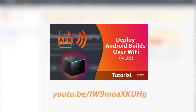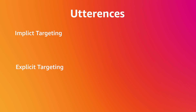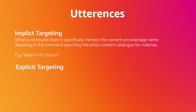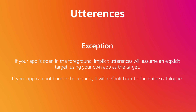If it's your first time deploying over ADB, you can check out the video linked on screen now for our tutorial on remote deployment. Before we finish though, there is one extra thing to note about utterances and how they're categorized in debug logs. The two primary types of utterances are Implicit and Explicit Targeting. Implicit Targeting is when a command does not specifically reference the content provider or the app name — for example, 'watch X' — which will result in Alexa searching the entire content catalog for any matches. Explicit Targeting, as you might guess, is when the app name or content provider is explicitly mentioned in the command, such as 'watch X on app name.' There is a small exemption in that whenever your app is open in the foreground, the request will assume that the explicit target is your own app. Though if your app can't support the request, it will default back to the entire catalog.